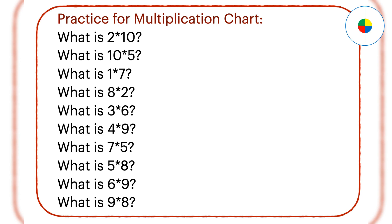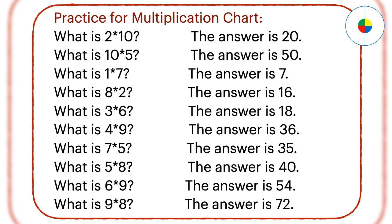Multiplication is more complex than addition and subtraction. You need to do more practice. Now let's check the answers. What is 2 times 10? Any number multiplied by 10, just add 0 to the 1's position. So 2 times 10 is 20.